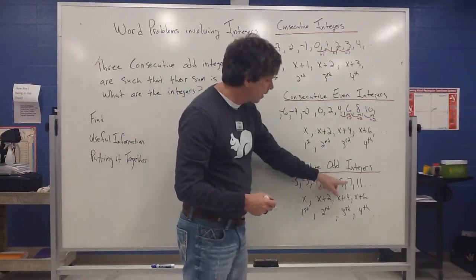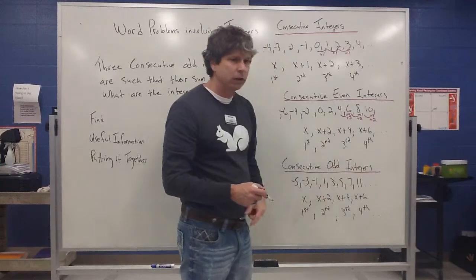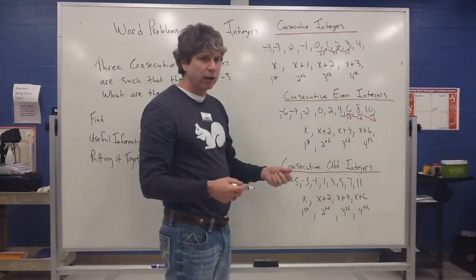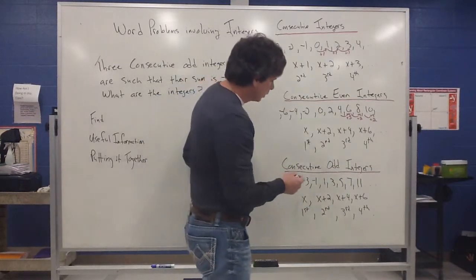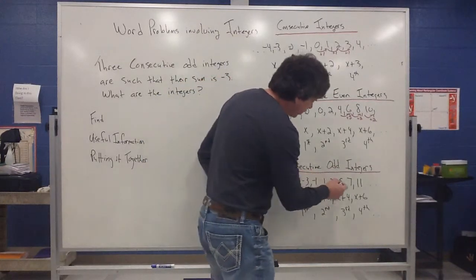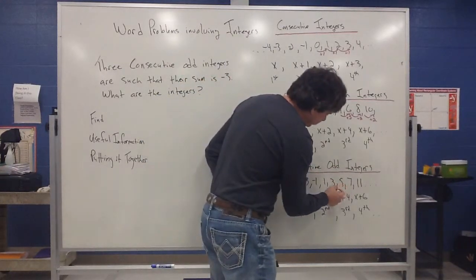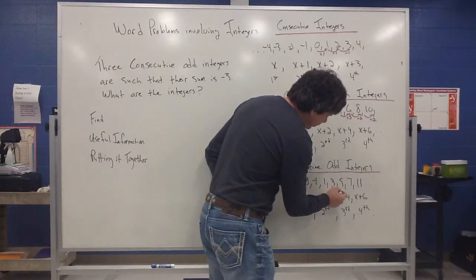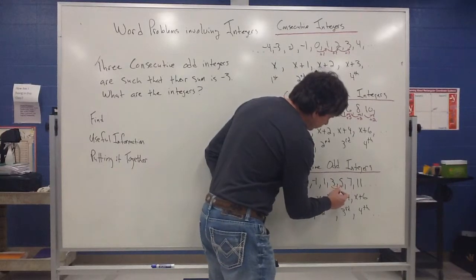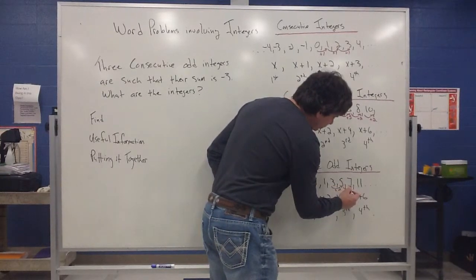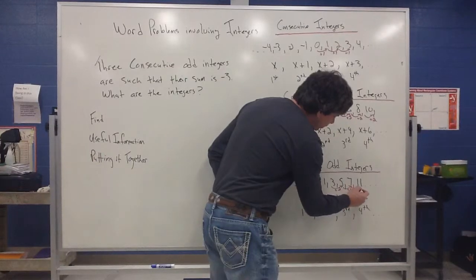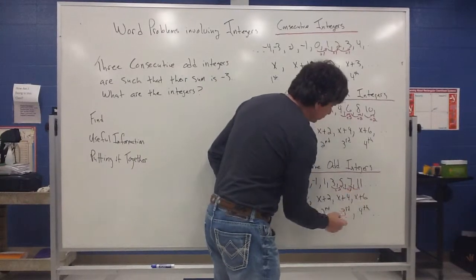Consecutive odd numbers look like this: 1, 3, 5, 7... If I go from 3 to 5, that increases by 2. From 5 to 7, that increases by 2 as well.